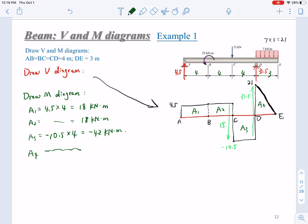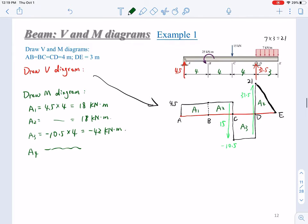Then we can draw the M diagram. From point A to B, C, D, and E. At the left end, we just start from the left end and then moving step by step to the right end. At the left end, we don't have a bending moment. We don't have external bending moment, we don't have reaction force as bending moment. We'll start from zero. Then from A to B, this change will be equal to A1. Change will be equal to A1, this is 18. So the bending moment will be starting from zero and increase linearly to 18.